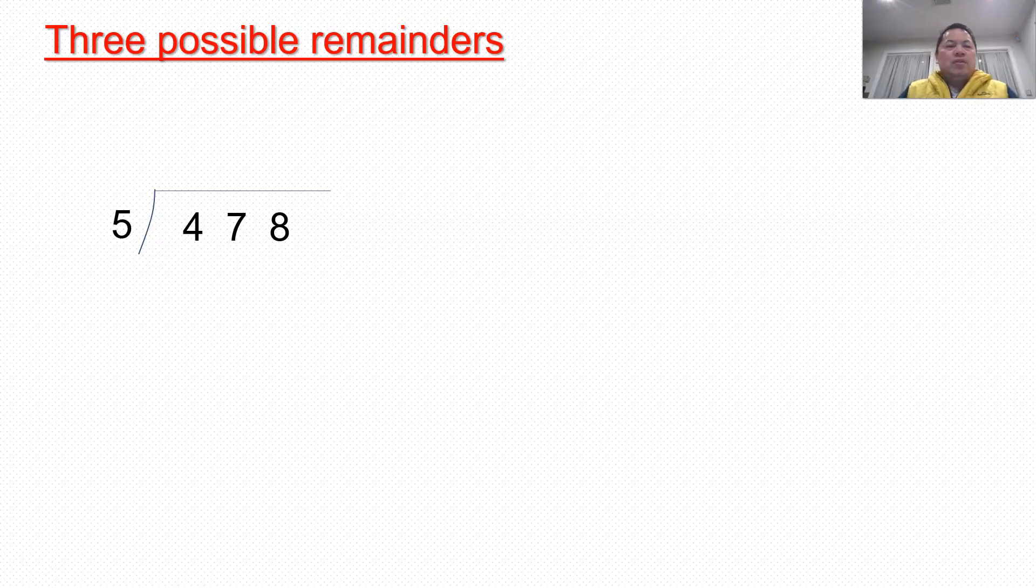Okay, moving on to the next page, 132. So division. So a quick reminder. Remember, I've emphasized on this before in class. The three possible remainders whenever you solve division. Of course, the first most one is when there's no remainder. That's the best one, isn't it?